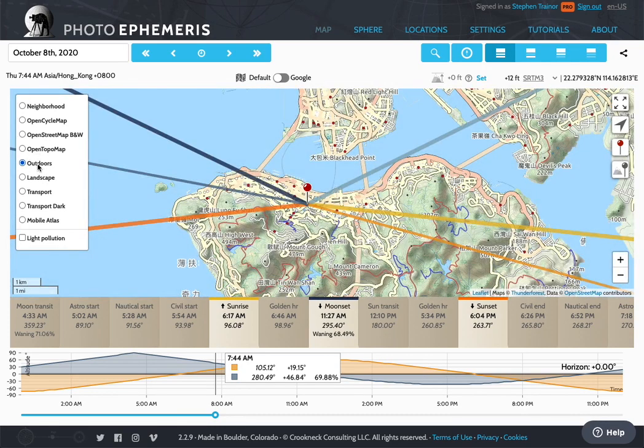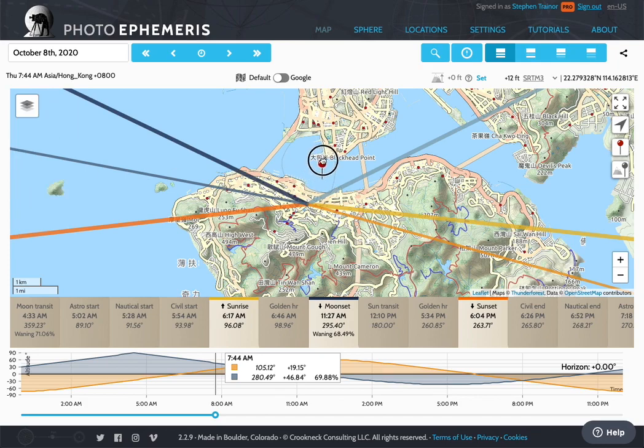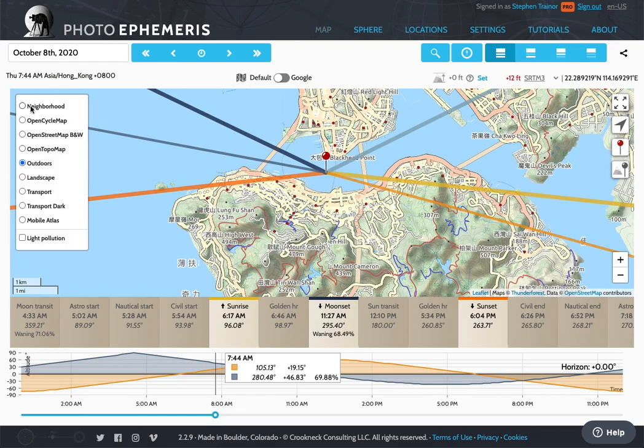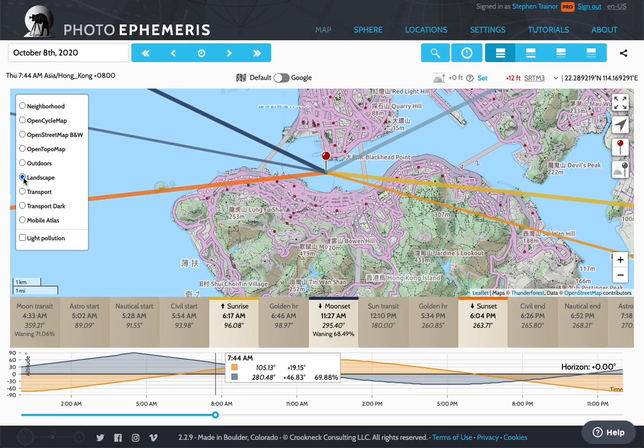The outdoor style gives a somewhat cleaner view of that. Here I'll move this out of the way just to let you see the map styles there. The landscape style is another topographic map style but with still plenty of transport details.